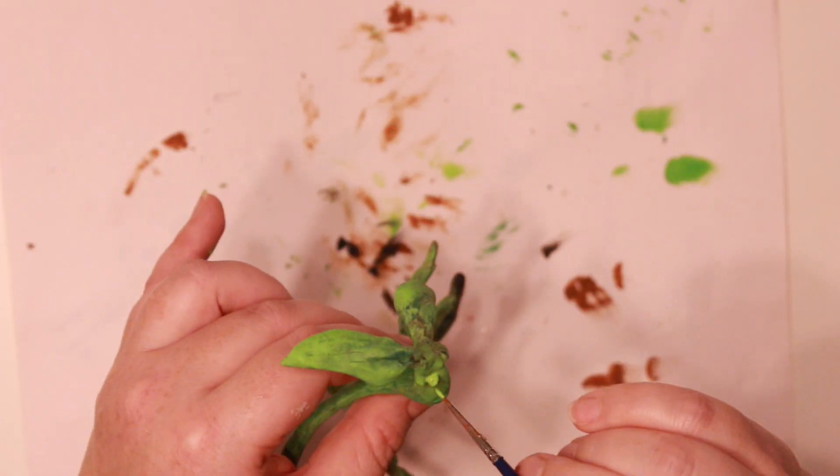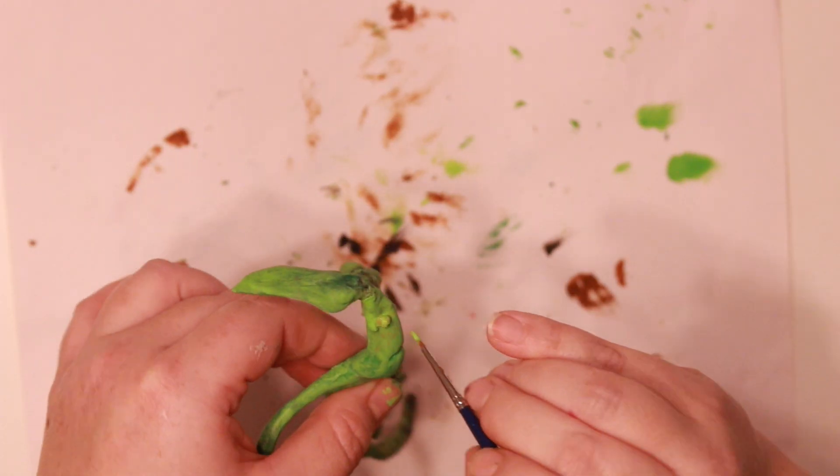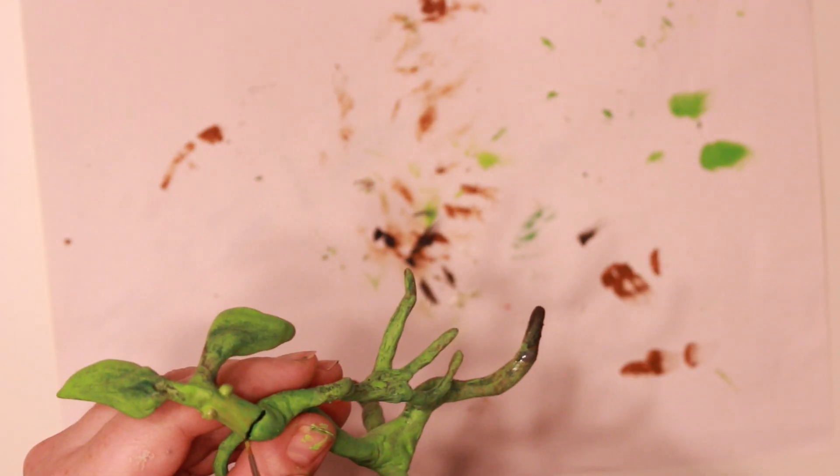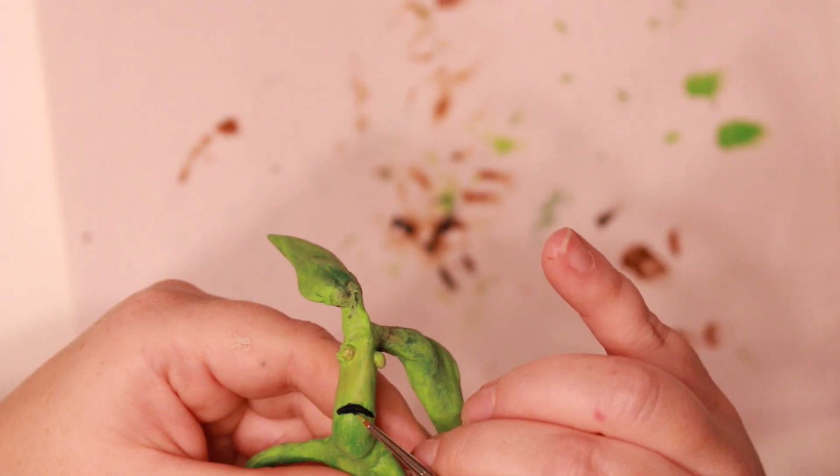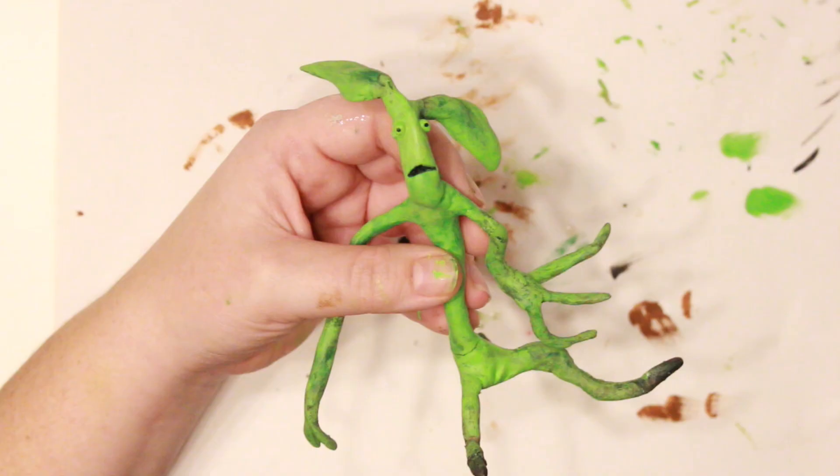So that's an up close of how he looks. I'm going over his eye sockets with that candy apple green to really make them pop, and then I'm filling in his mouth with black. This is a double zero brush.